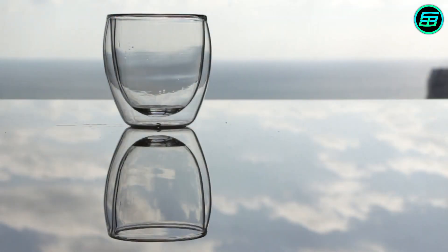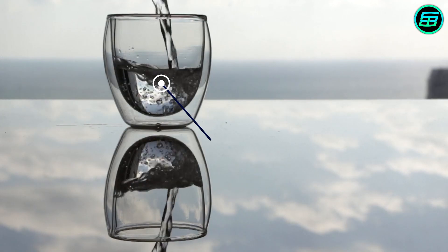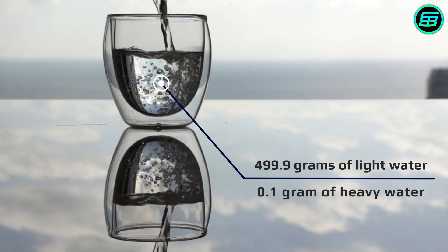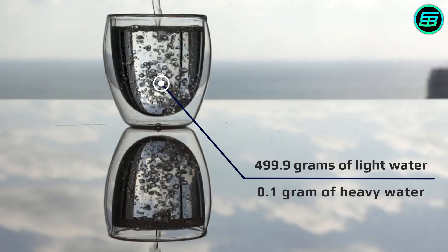So, if we drink 500 milliliters of water, we drink about 499.9 grams of light water and 0.1 gram of heavy water.